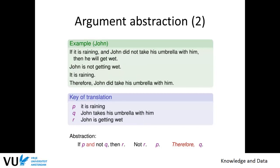Let's look at another real-life example. If it is raining and John did not take his umbrella with him, then he will get wet. Second fact: John is not getting wet. Third: it is raining. Human beings can conclude that John did take his umbrella with him. We translate this into propositions: P is 'it is raining,' Q is 'John takes his umbrella,' and R is 'John is getting wet.' Using the same abstraction — if P and not Q then R, plus not R and P — we conclude Q: John did take his umbrella.